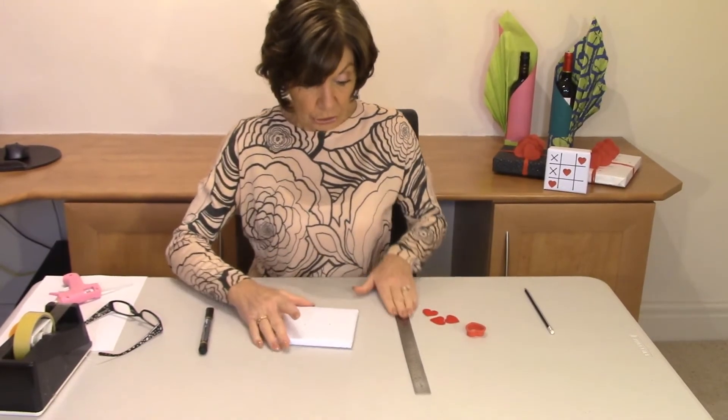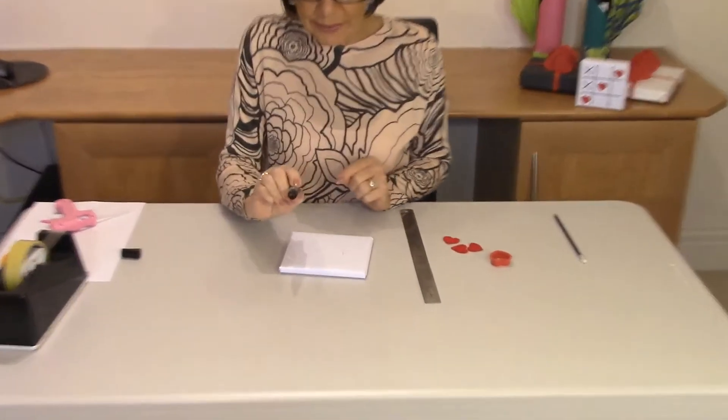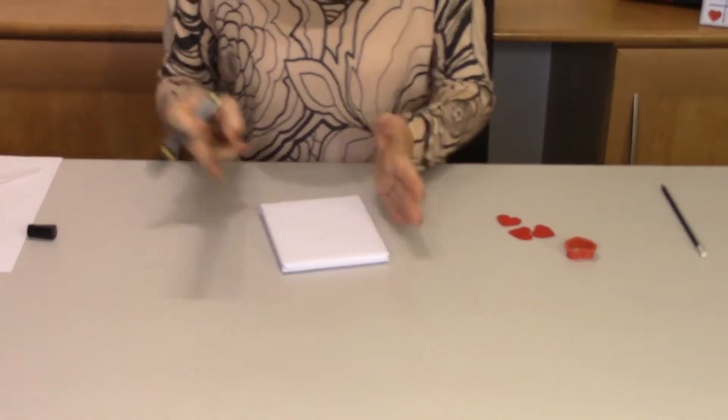The next thing to do is grab yourself a felt tip pen which has quite a thick nib on it because you want these lines to show up.